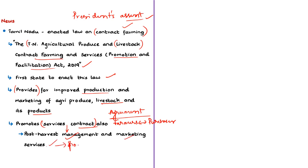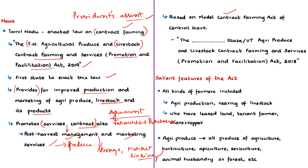Post-harvest management and marketing services include storage, primary value addition, marketing linkages to organized retailers, processors, exporters and so on. This legislation is based on a model law prepared by the central government. The Union Finance Minister announced the preparation of a model contract farming act in the 2017-18 budget, based on which the final model act was prepared.